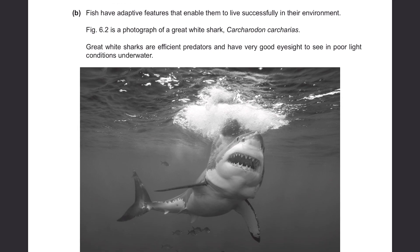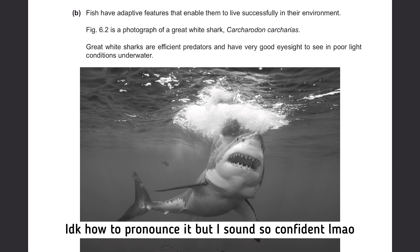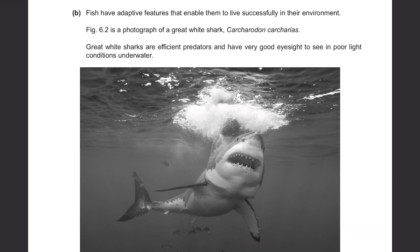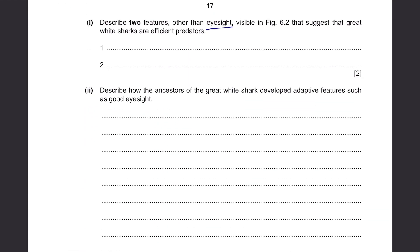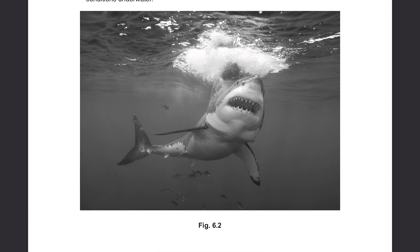Part B. Fish have adapted features enabling them to live successfully in their environment. Figure 6.2 is a photograph of a great white shark. Describe features visible in the figure that suggest great white sharks are efficient predators. It has lots of teeth, good for catching smaller fish, and big jaws to swallow prey. Their body shape is streamlined, making them fast underwater. They also have shading patterns on their body for camouflage among sea plants and corals.